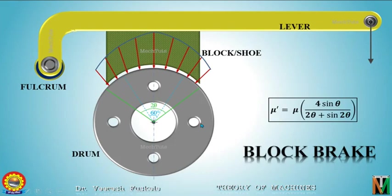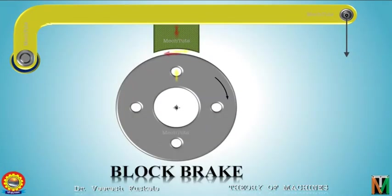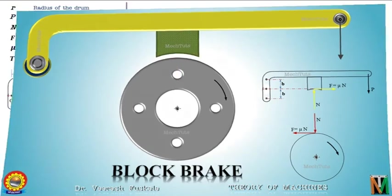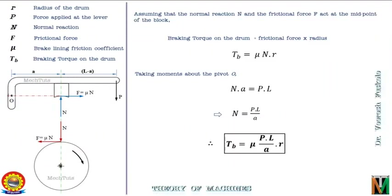We then discussed the forces acting on both the drum and the lever-block assembly, and learned to draw the free body diagram of the drum and lever-block assembly. Then in the analysis we discussed two configurations of the single block brake. The first was when the fulcrum point passes through the line of action of the friction force, and this was the equation for braking torque.